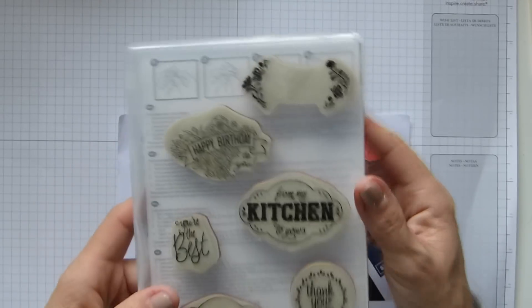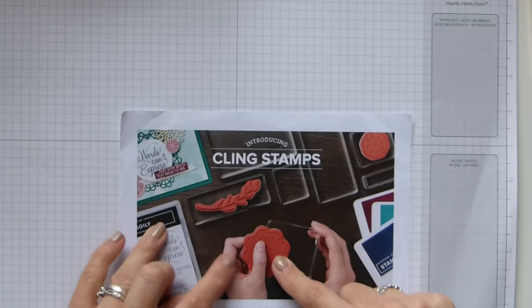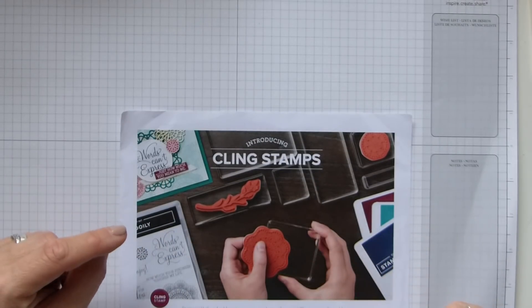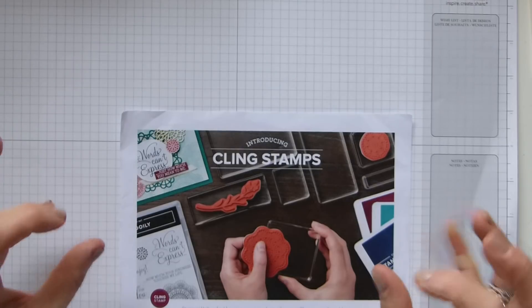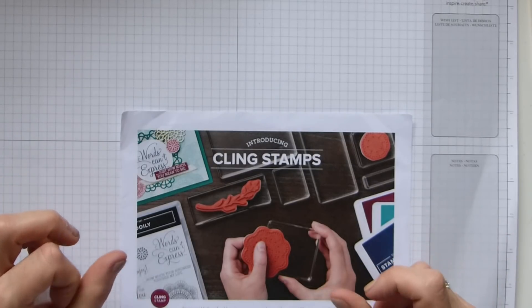So as of the spring summer catalogue, we are getting cling stamps. They're exactly the same with the red rubber but they're even better now. They now come with an adhesive labelled image that will actually cling really well to your clear blocks.